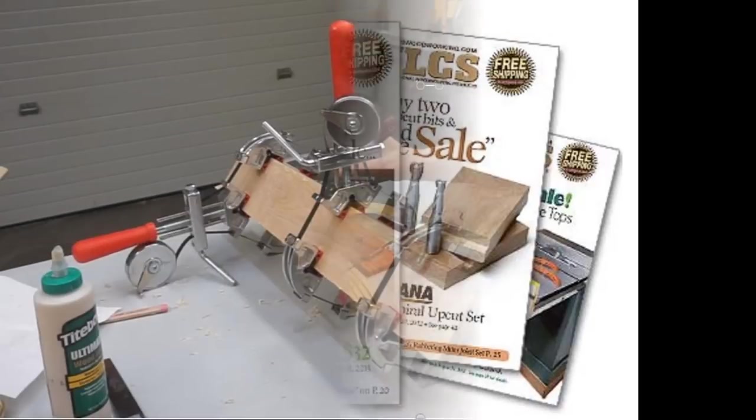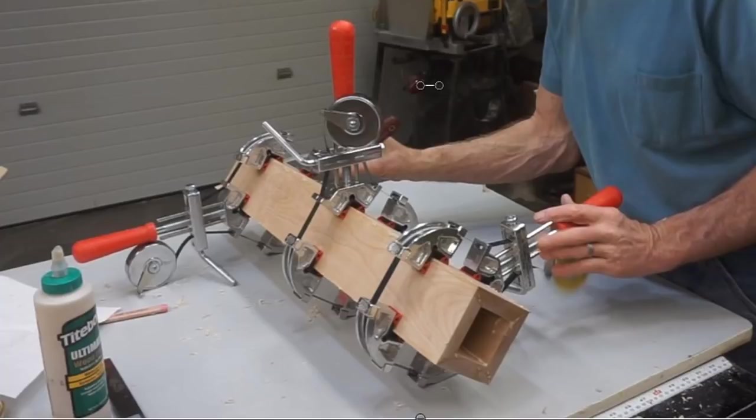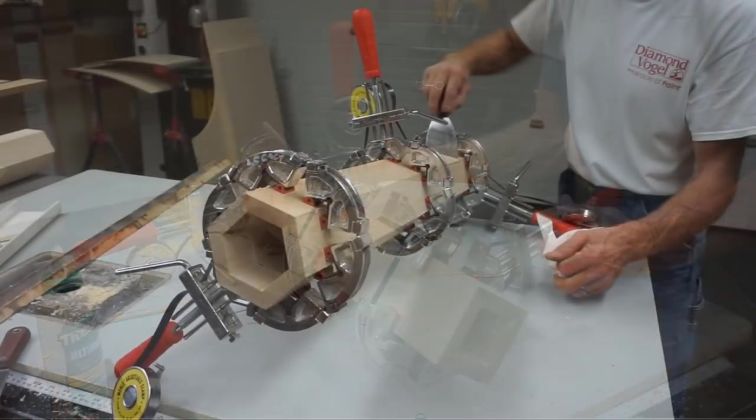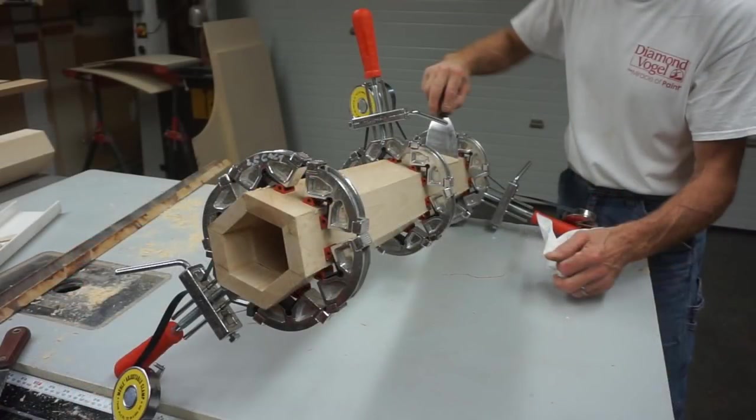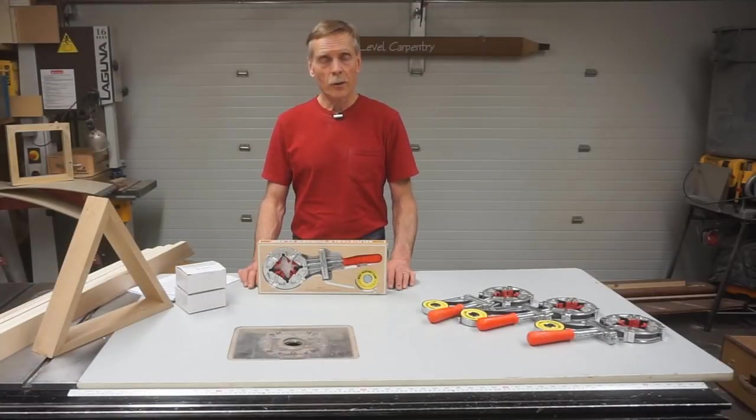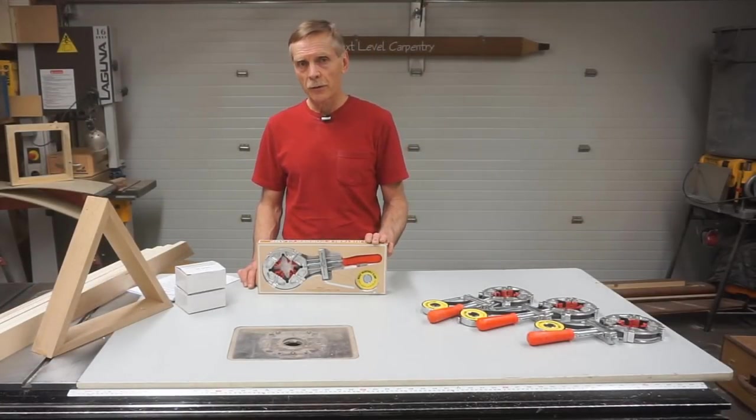When a good friend said they worked great for gluing box Newell posts and large mitered window casings, I gave them a try for gluing hexagonal tubes from my router lathe video. I was so impressed by how well they worked that I contacted MLCS about doing a video review.